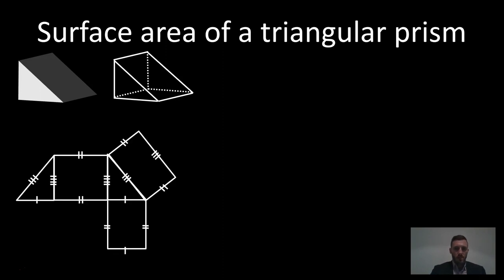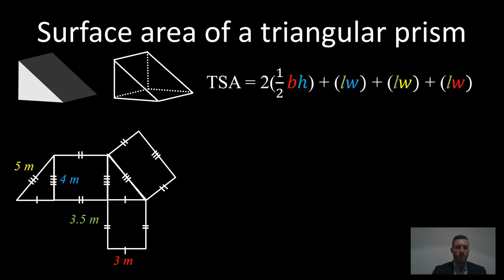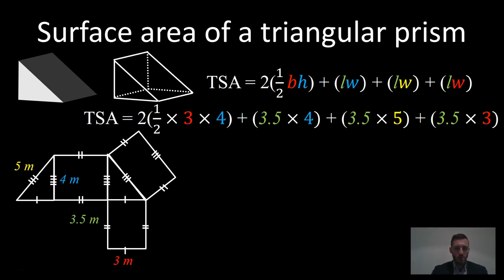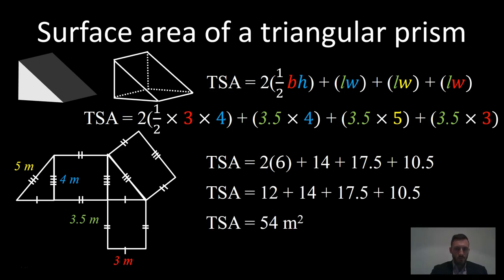Now let's look at the surface area of a triangular prism. The surface area is the sum of the area of all the sides. Drawing it as a net, we've got two triangles and three rectangles. We use the formula for the area of a triangle and the area of a rectangle. The two triangles are the same size, indicated by the dashes on the sides, while the three rectangles are all different sizes, so we calculate each rectangle individually. Evaluating, the total surface area of this triangular prism is 54 metres squared.